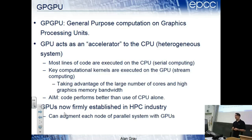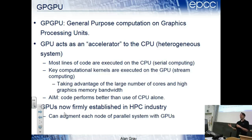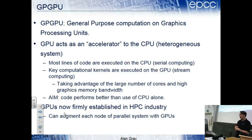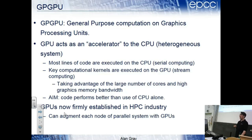GPUs are commonly called accelerators because they accelerate the system. The system is heterogeneous - you have a CPU and GPU in the same computer, but they're distinct and you have to transfer data between them. Most lines of code execute on the CPU, but the key computational kernels are offloaded to the GPU using stream computing. The aim is to perform better overall than using the CPU alone.